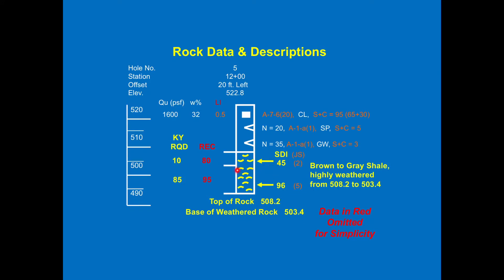Looking at SDI values on the plans, shales are denoted with frowny faces and smiley faces. An SDI of 45 is a non-durable shale, denoted with a frowny face. Note the Kentucky RQD is 10, much less than the recovery because we broke it up — it's a bad shale that breaks apart. Further down the hole, an SDI of 96 is a durable shale, denoted by a smiley face, with RQD closer to recovery at 85 and 95 — a much stiffer, harder shale. The JS of 2 and 5 is the Jar Slake test, a subjective rating of one through five. You can stick a sample in a bucket in your truck and do this test on shale right there. Note also the top of rock and base of weathered rock — that's what we're targeting for structure excavation, which we'll discuss in the next session.